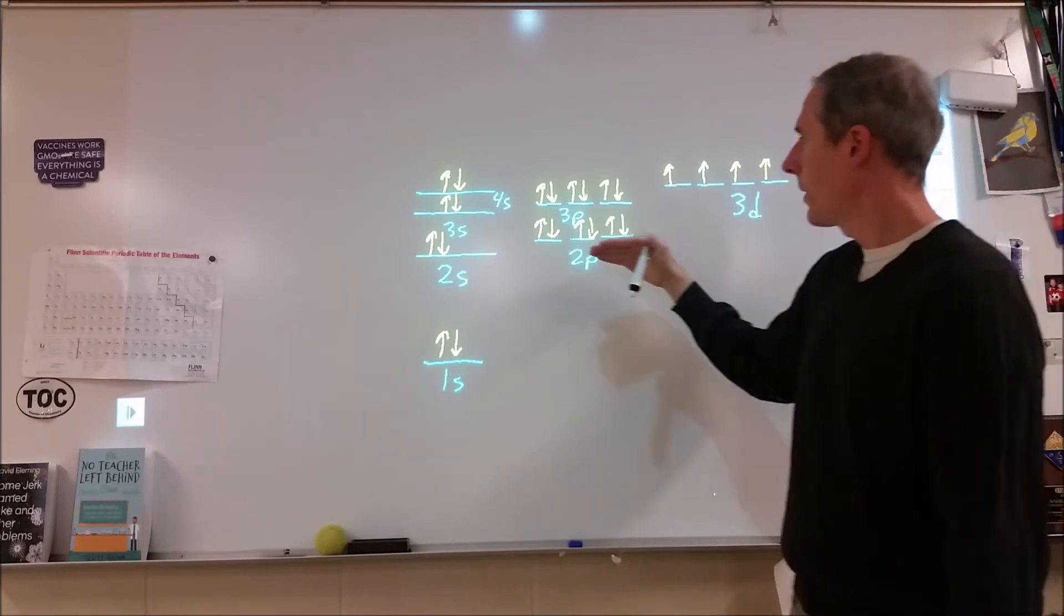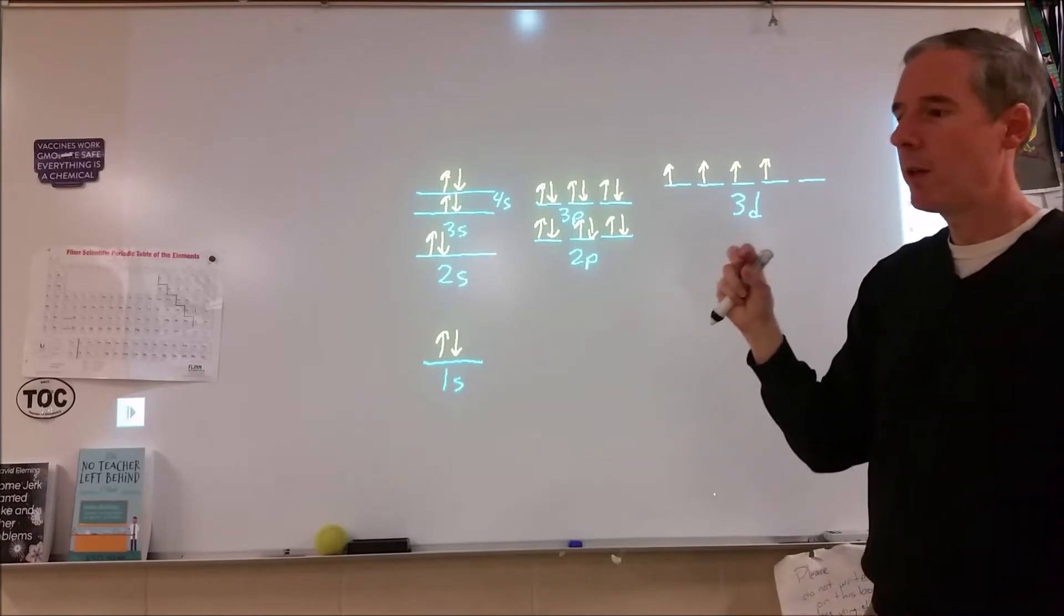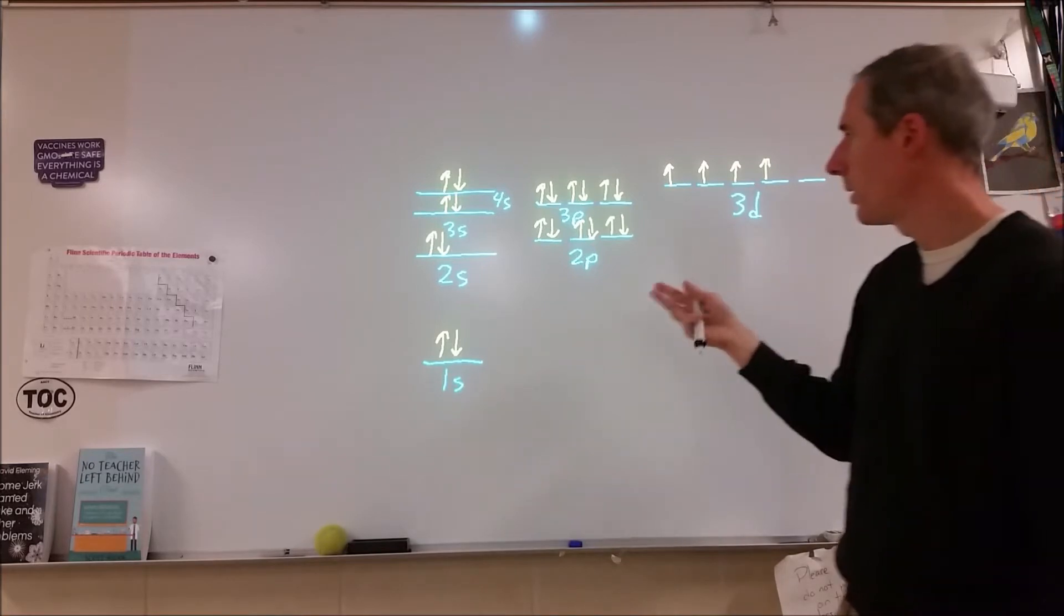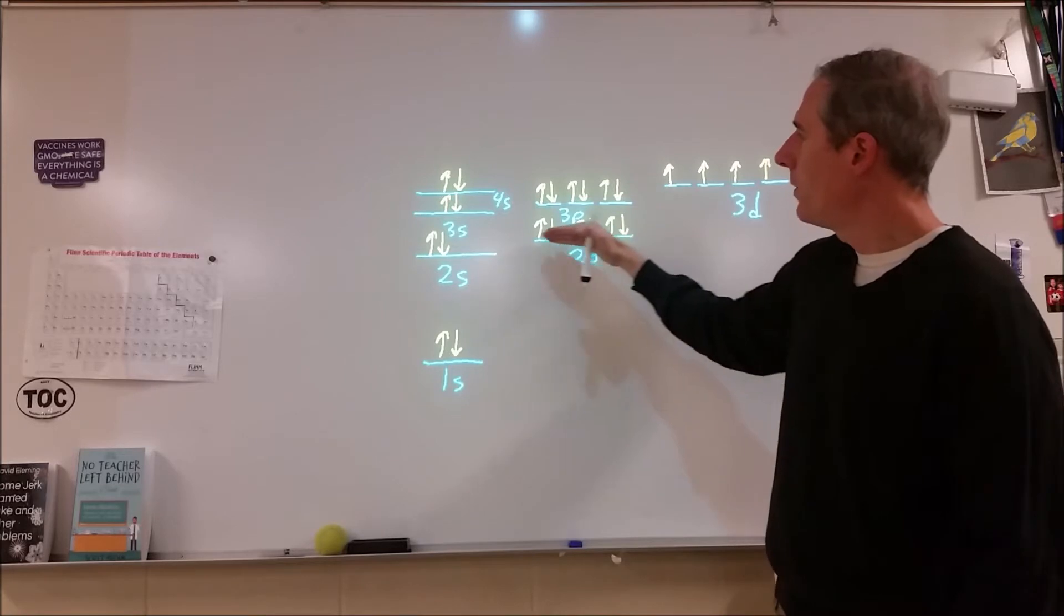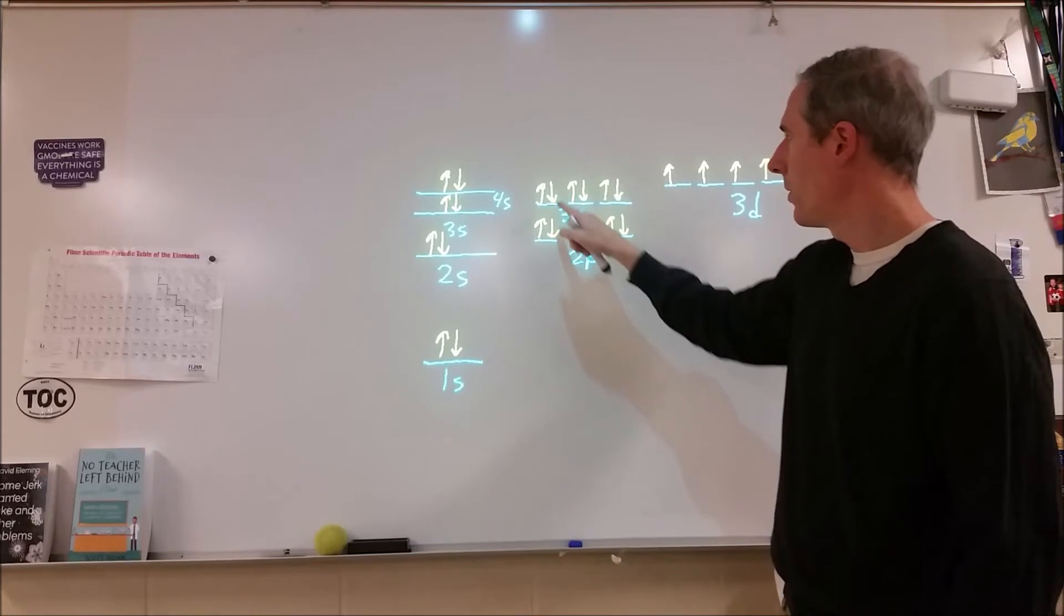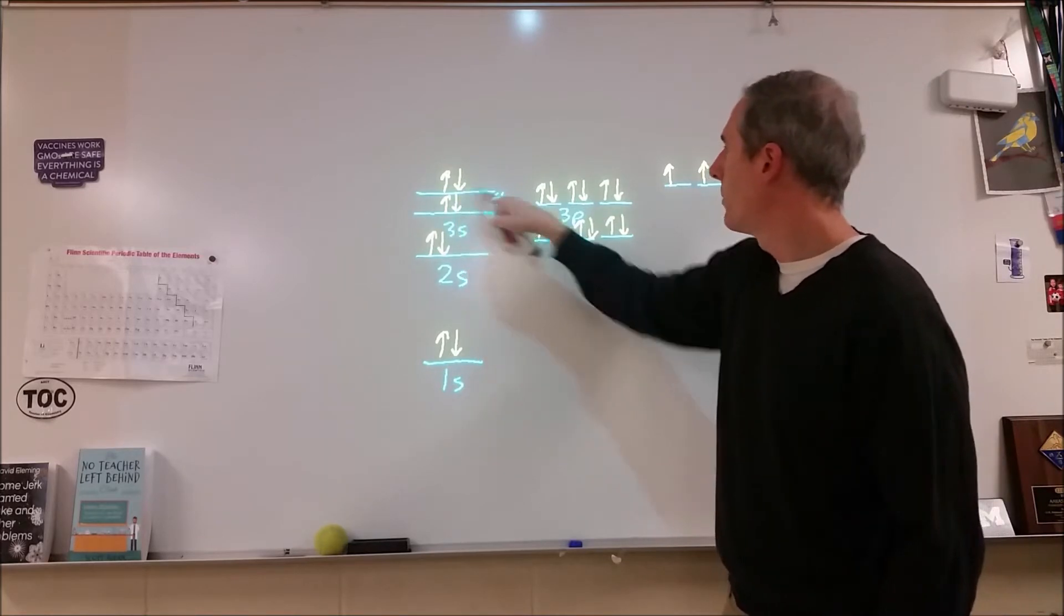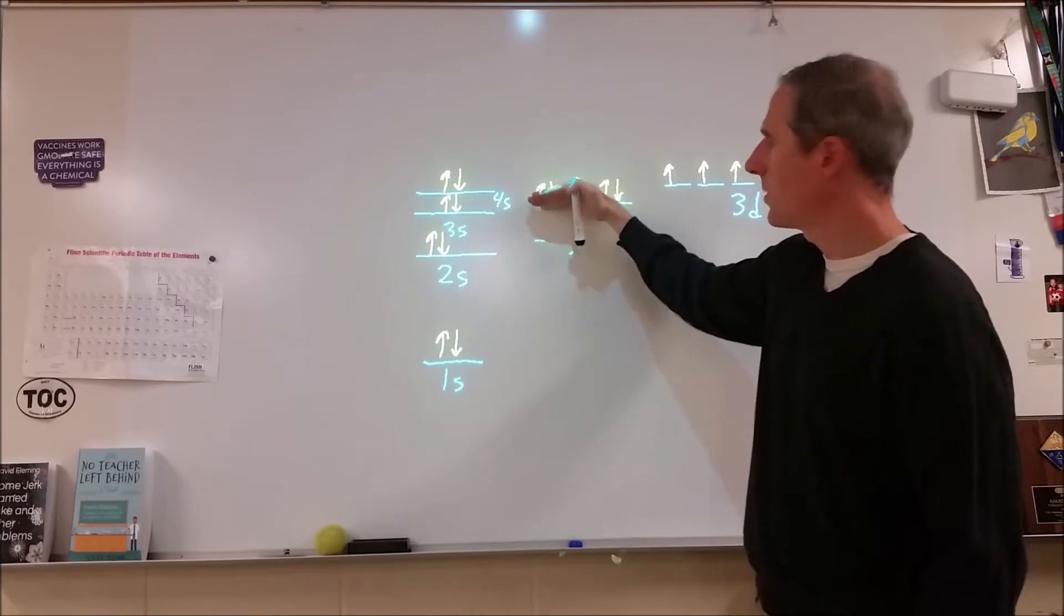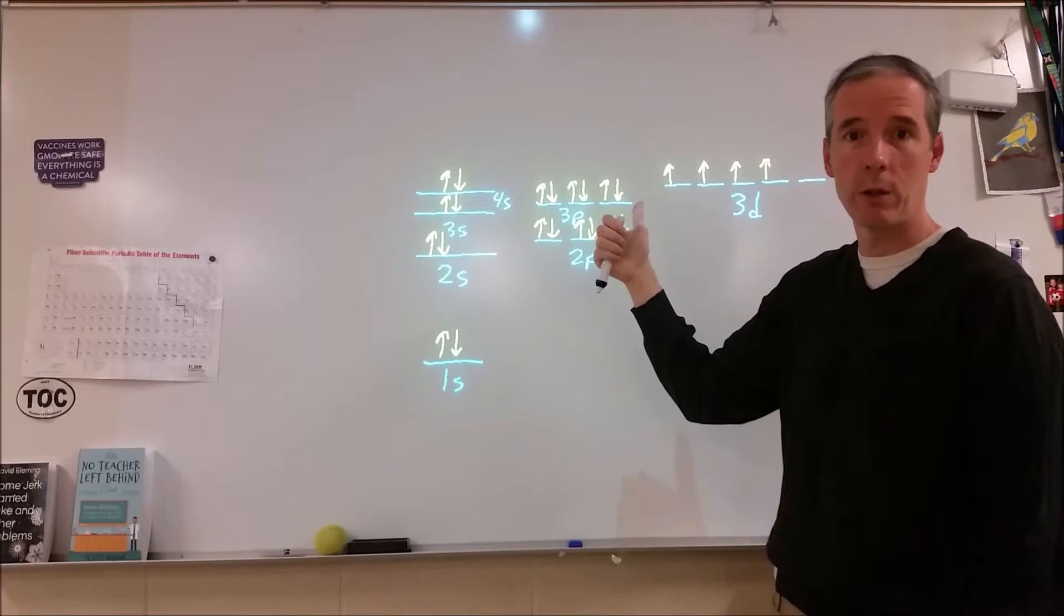One of the things that we don't often talk about is the fact that each of these represents one orbital and each of them, the height, represents the energy or the average distance between the electron and the nucleus. And all of these orbitals that are occupied all influence all the other ones.